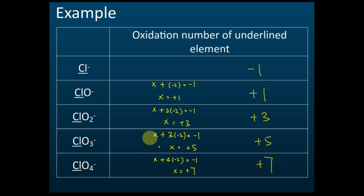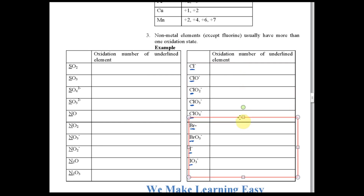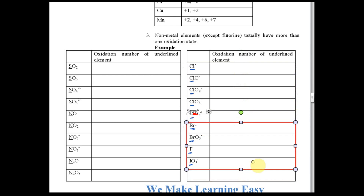The answers — except the first one which is negative 1, the others are positive. These are the working. Let's proceed to the last one — the last four for bromine and iodine.